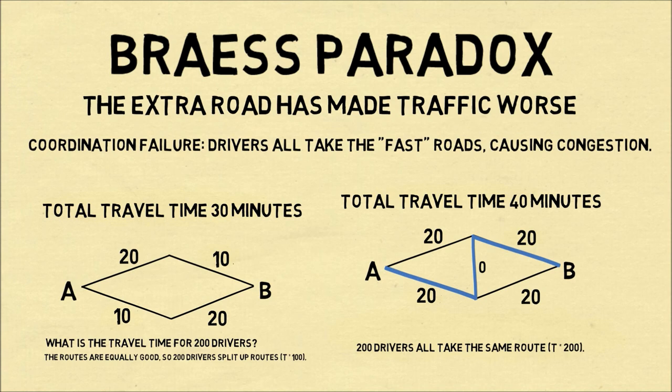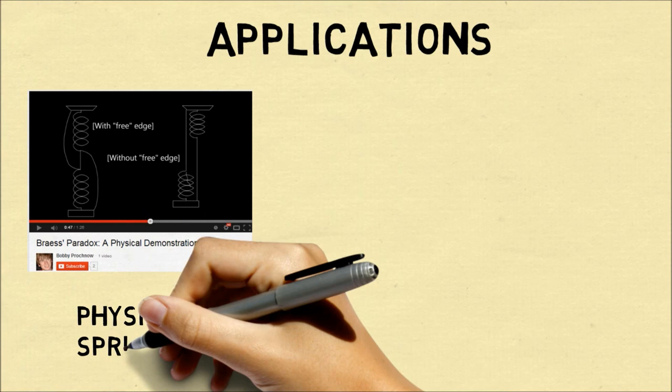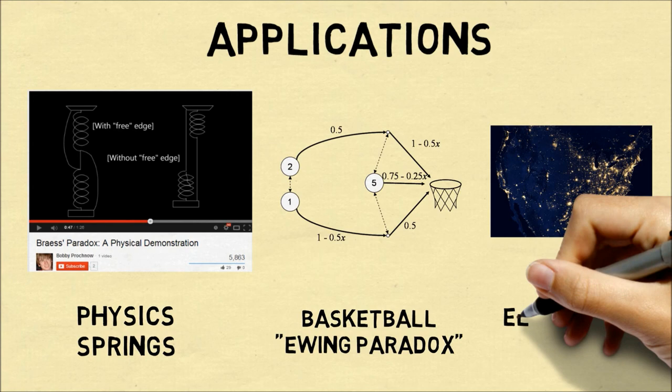and the free road made the travel time 40 minutes, because everyone got congested on the same roads. This has many applications: in physics we can look at the distance of a spring, in basketball it explains the Ewing Paradox, and it can even happen in electricity transmission, which is also a network.